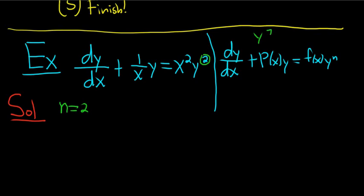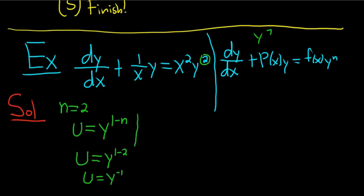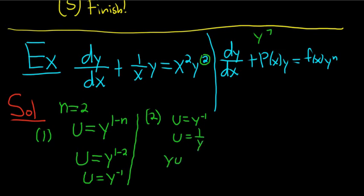Step 1 is to compute the substitution. u is equal to y to the 1 minus n — that's our substitution — so u equals y to the 1 minus 2, so u equals y to the negative 1. Step 2: we're going to solve for y. We have u equals y to the negative 1, which is the same as u equals 1 over y. Multiply by y, you get yu equals 1, then divide by u, and you get y equals u to the negative 1.